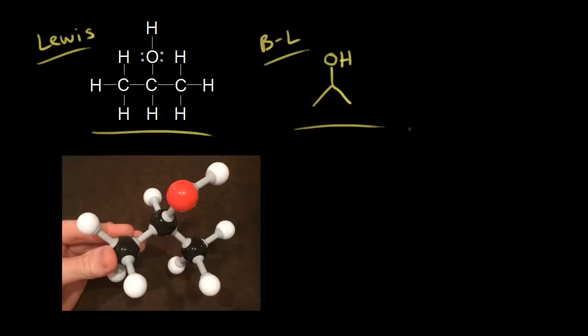What about three-dimensional bond line structures? How could you represent this molecule in three dimensions using a flat sheet of paper? On the left here is a picture where I made a model of this molecule, and this is going to help us draw this molecule in three dimensions. We have a flat sheet of paper — how could we represent this picture on our flat sheet of paper?